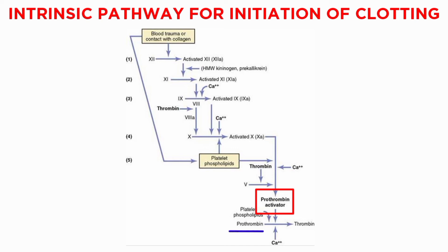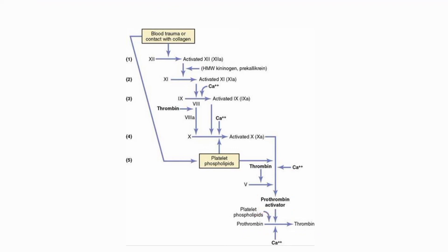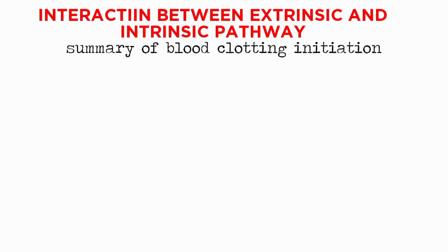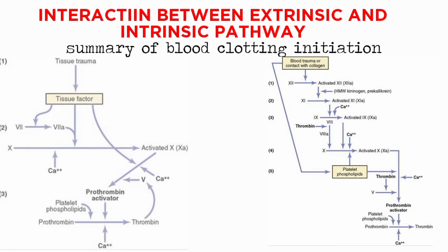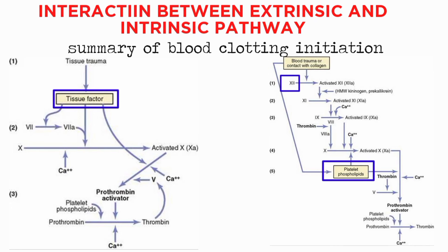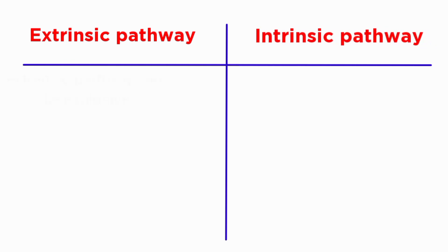Prothrombin activator initiates, within seconds, the cleavage of prothrombin to form thrombin. Now for the interaction between the extrinsic and intrinsic pathways: after blood vessel rupture, clotting occurs by both pathways simultaneously. Tissue factor initiates the extrinsic pathway, whereas contact of factor 12 and platelets with collagen in the vascular wall initiates the intrinsic pathway.